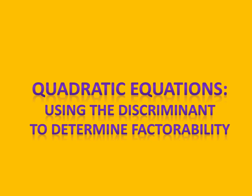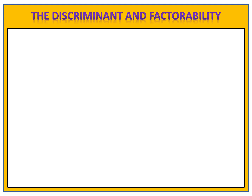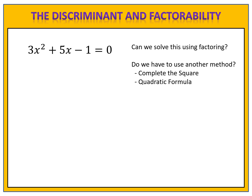In this lesson we're going to learn how to use a tool called the discriminant to determine whether or not a quadratic equation can be solved by using factoring. Suppose we have a quadratic equation like the one that you see here. We want to know if we can solve this using the method of factoring, or if we have to use another method like completing the square or the quadratic formula. How can we determine this?